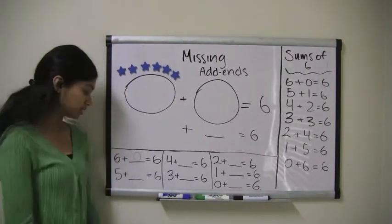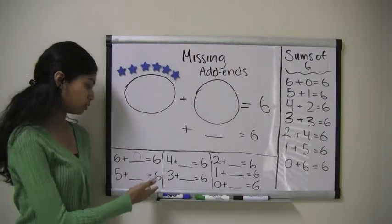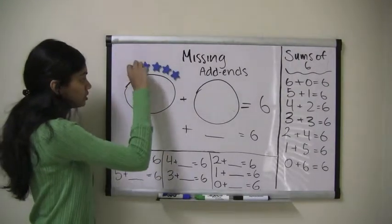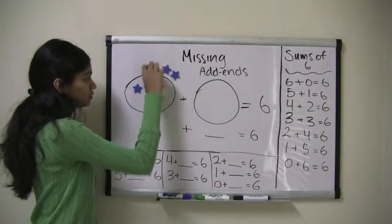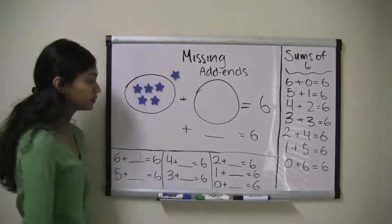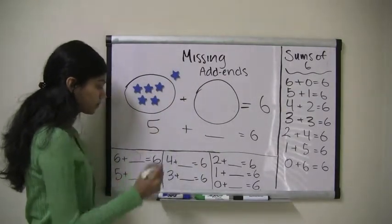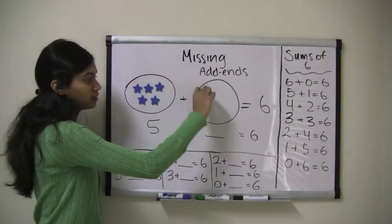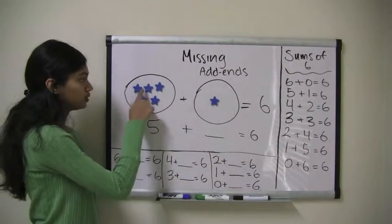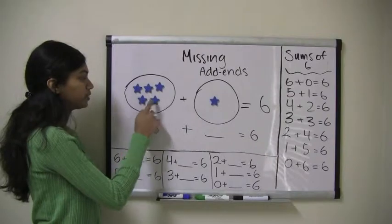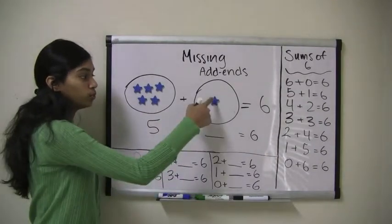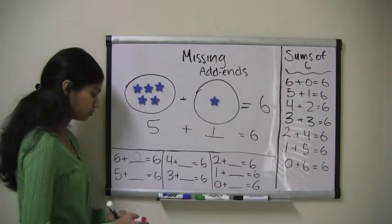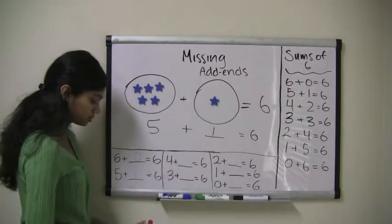Our next problem is 5 plus what equals 6? So, if I put 5 stars in this area for 5, I now have 1 star left to put in this area. So, 1, 2, 3, 4, 5 plus 1 must equal 6. So, 5 plus 1 equals 6.